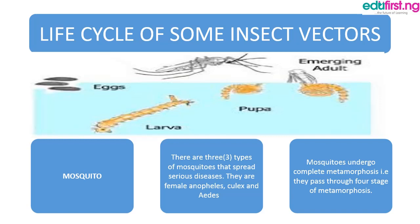The larva stage lasts between two to fourteen days, after which it proceeds into the pupa stage, which lasts between hours and days. The pupa finally releases the imago, or the adult mosquito. That completes the life cycle of the mosquito.